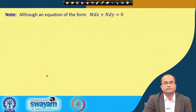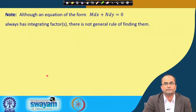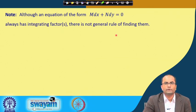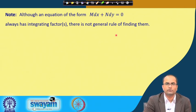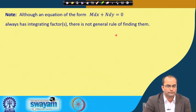Although an equation of the form M dx + N dy always has an integrating factor (there could be more than one), there is no general rule for finding them — it is somewhat tedious in general. So we will consider only some special cases where we can find the integrating factor easily.